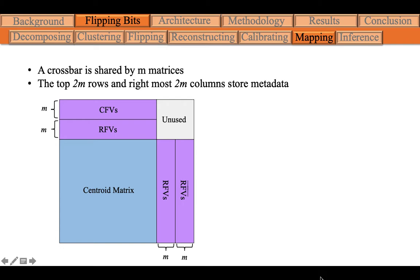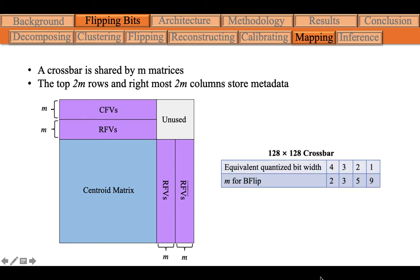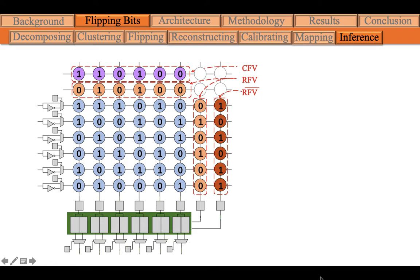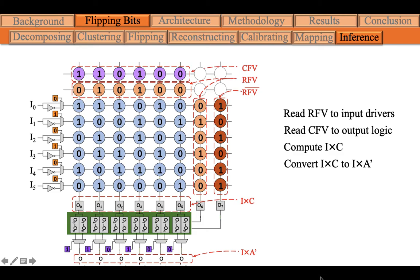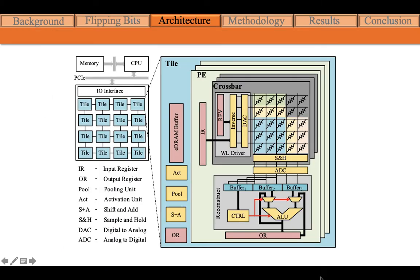By changing the number of bit matrices that share the same crossbar, which is M here, we can change the model save ratio. For example, in a 128 by 128 crossbar, storing two bit matrices on the same crossbar is equivalent to 4-bit quantization. During inference, the first step is to read the row flipping vectors out into the input driver, then the column flipping vector is read out to the output logic. During computation, the inputs will be inverted according to the row flipping vectors, and the matrix-vector multiplication results will be adjusted according to the column flipping vector to get the results of I times A. For bit matrices that share the same crossbar, only one matrix-vector multiplication is needed, since the results of I times C can be reused.